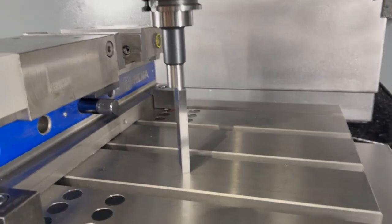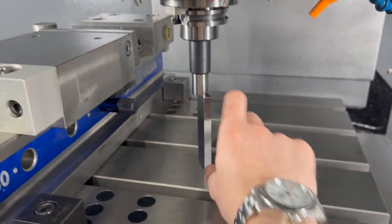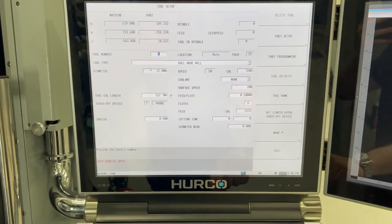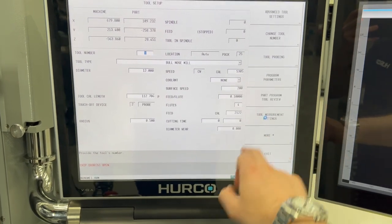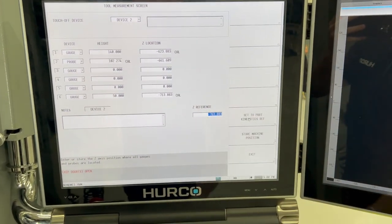All right so now we have our tool of a known length in the spindle jogged down onto our slip of a known length. Then you're going to go to your tool setup page, more, tool measurement settings and this is the Z reference figure here that we want to change.